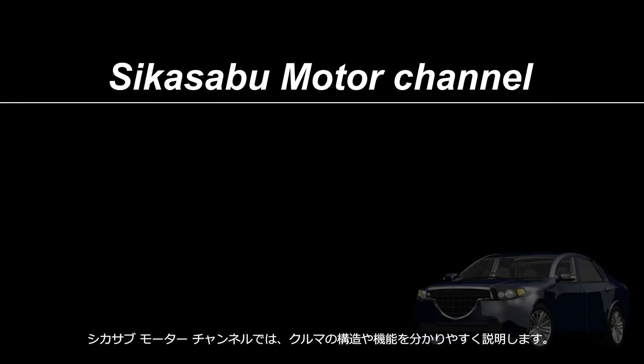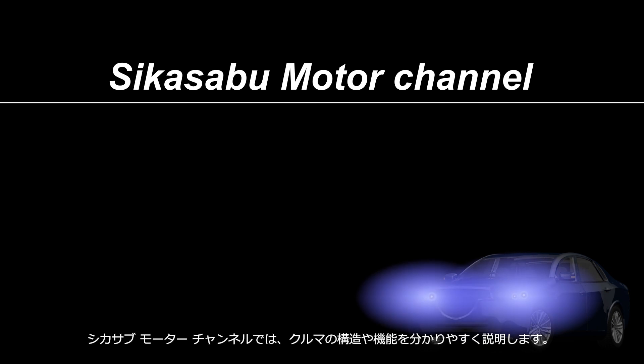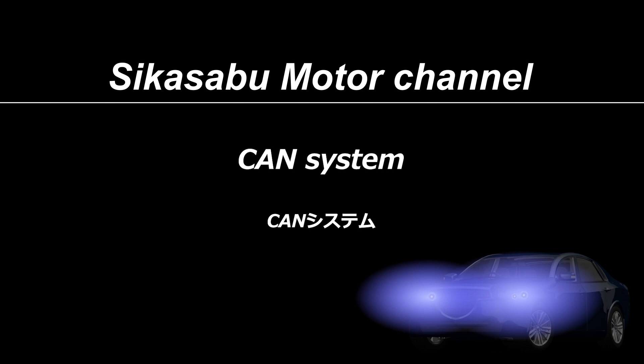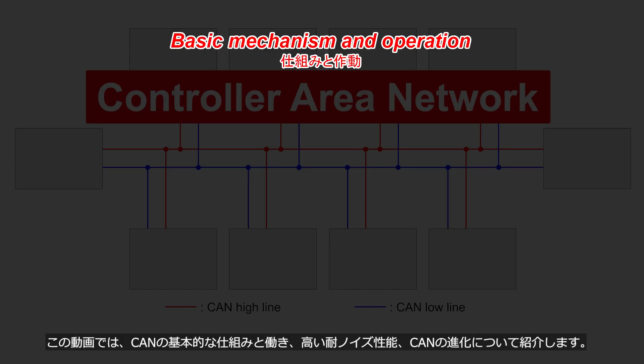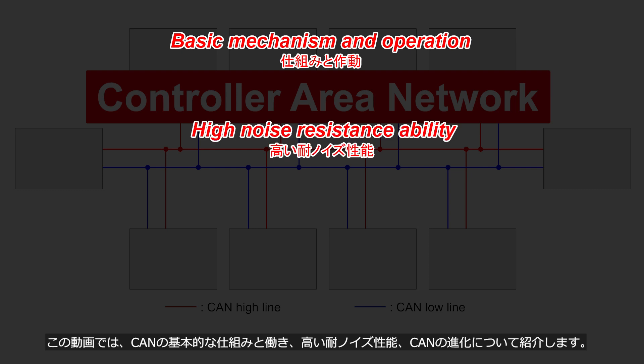Welcome to the Sheikah Serbu Motor Channel. This channel provides easy-to-understand explanations of car mechanisms. The topic of this video is the CAN system. CAN is an abbreviation for Controller Area Network, a system that controls communication between various control units. This video showcases the basic mechanism and operation of CAN, its high noise resistance ability, and the evolution of CAN.